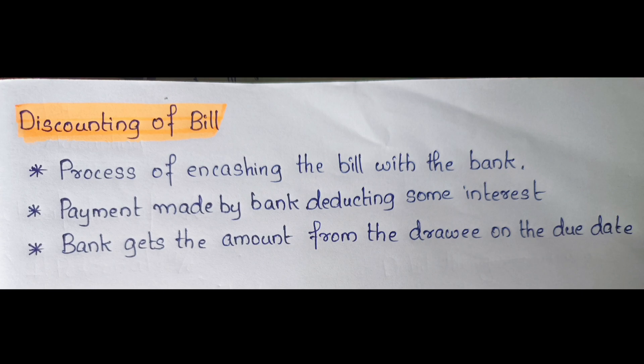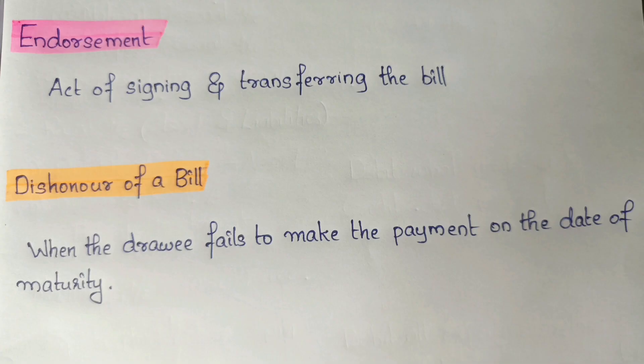Fourth, discounting of bill — the bank cashes out the bill before maturity. Fifth, endorsement — the drawer signs and transfers the bill to another party. Sixth, dishonor of bill — when the drawee fails to pay, that stage is called the dishonor of a bill. These are the six topics covered in this class.